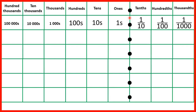So here we have a place value chart, and we count place values from the decimal point. Our whole number place values are our ones, tens, hundreds, thousands, ten thousands, and hundred thousands, and our decimal place values are our tenths, hundredths, and thousandths.